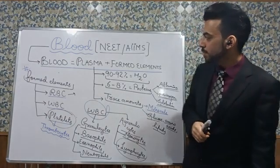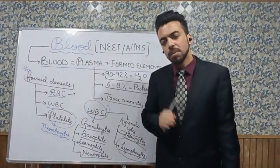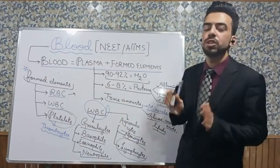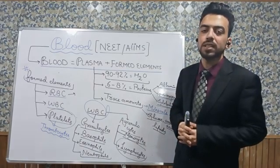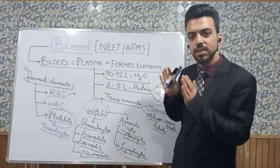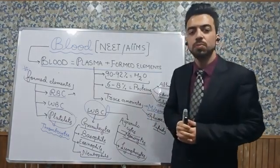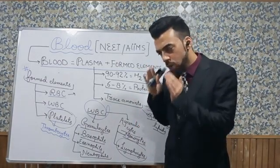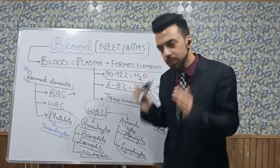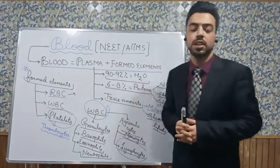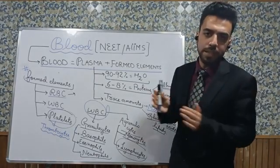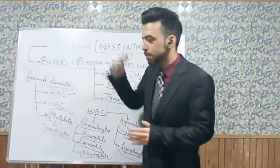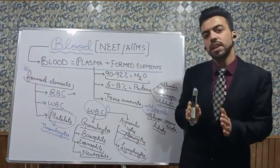First of all, the definition of blood. Blood is a specialized connective tissue. Our body has different tissues, and there is a tissue called the connective tissue — the most extensively distributed, most common, and most abundant tissue inside our body. It is the connective tissue, and blood is an example of the specialized connective tissue.